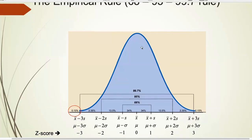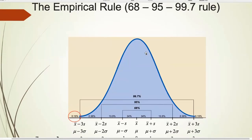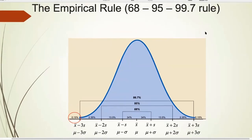The empirical rule is an approximation, but it makes our lives easier — you just need to remember those three numbers without looking up the z-table. For example, if a person's height follows a bell curve, and you're asked for the probability of being within plus or minus 2 standard deviations, you know from the empirical rule that's about 95%.